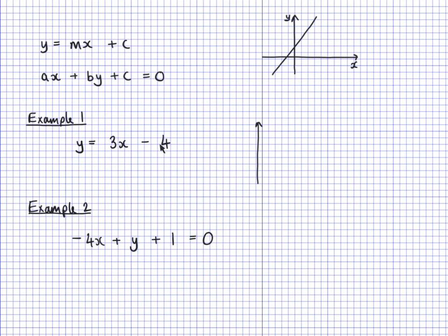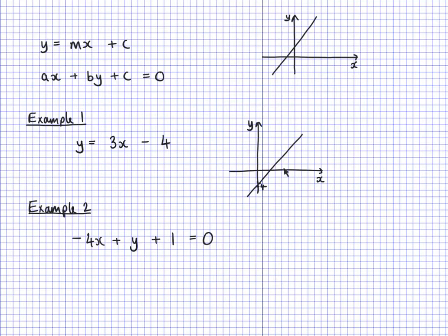I have negative 4 for the y-intercept. So let's sketch some axes. The sketch of this graph has to have a positive gradient, so it goes like this. It can't go through the top because that would be a positive y-intercept — a negative y-intercept would be here. So maybe somewhere here at negative 4. The graph has a positive gradient and crosses at negative 4.